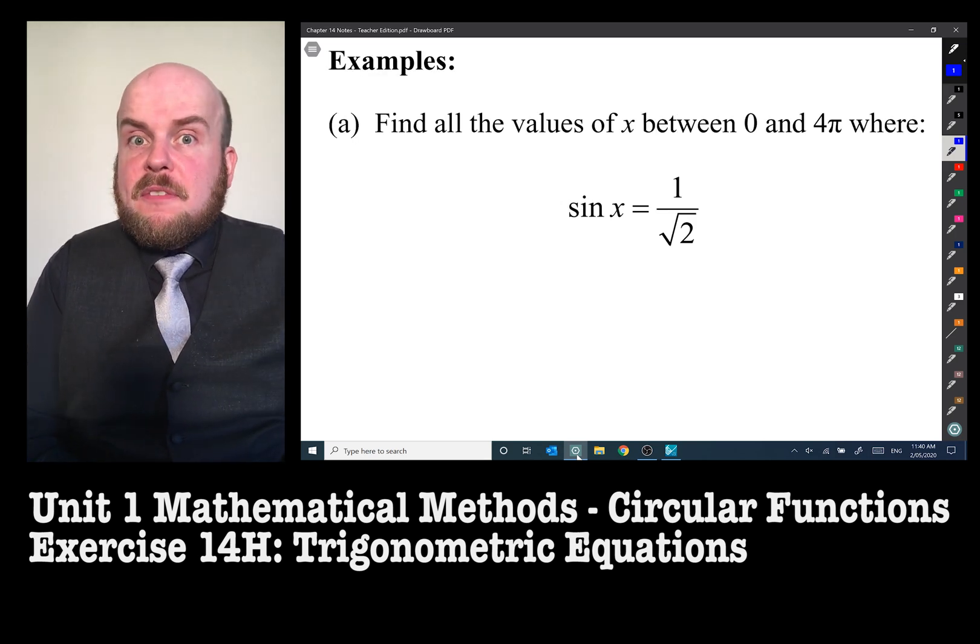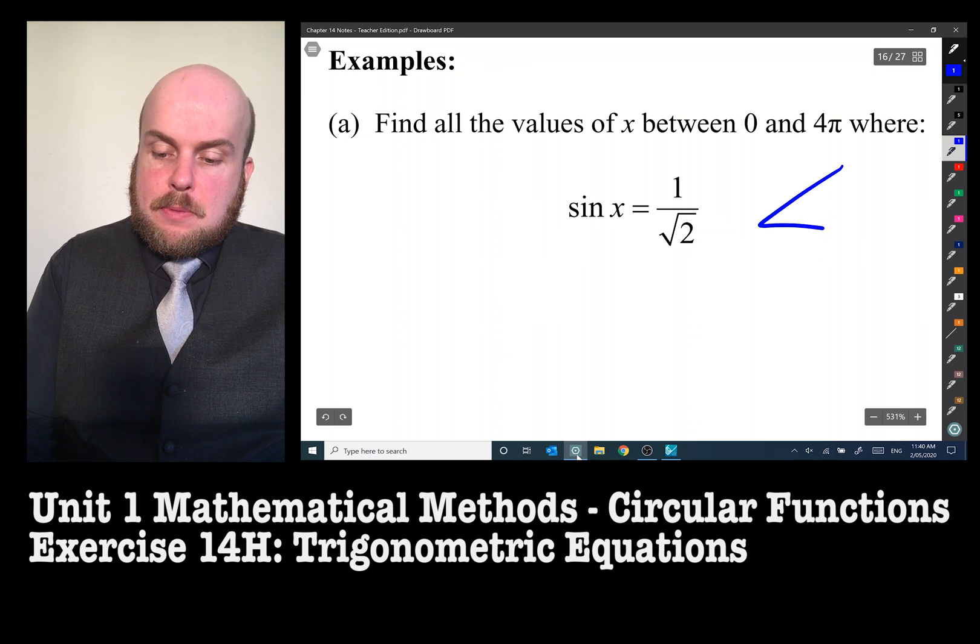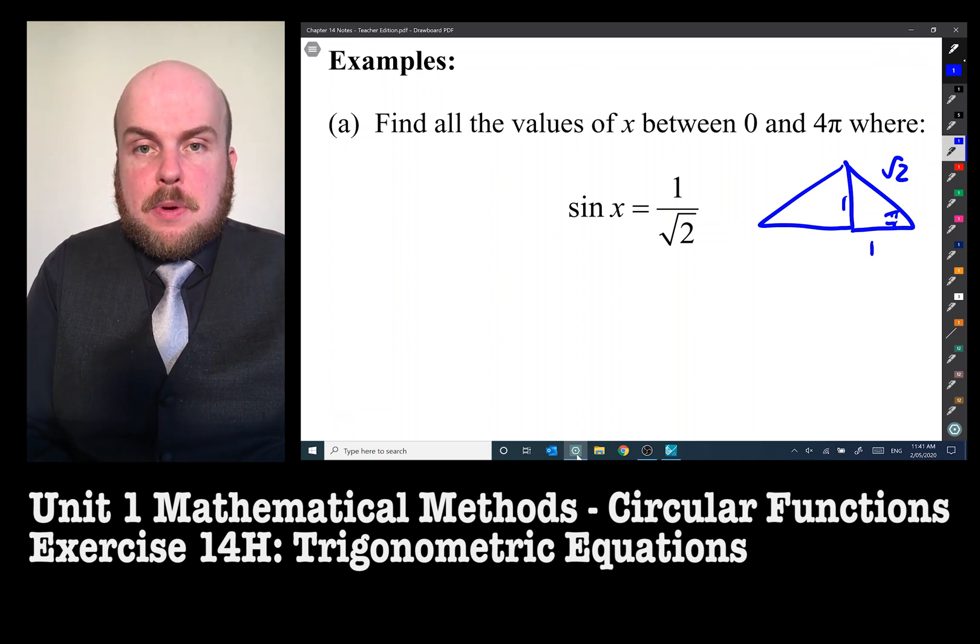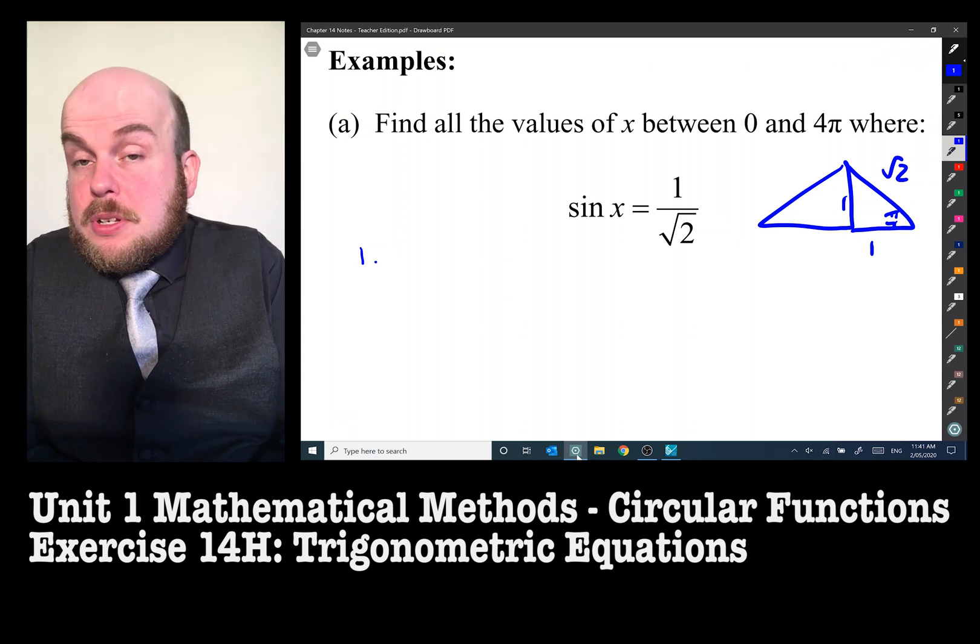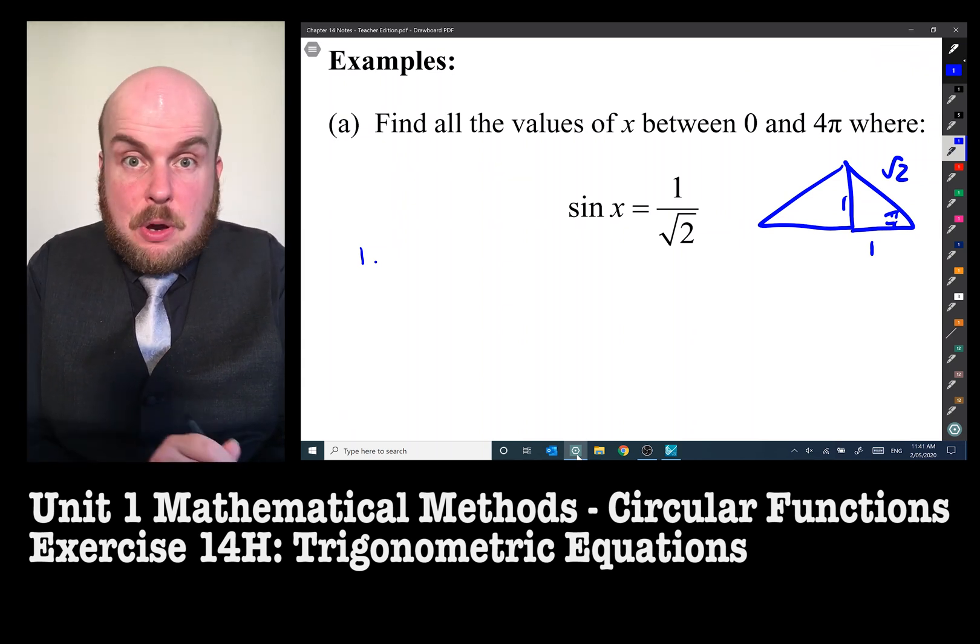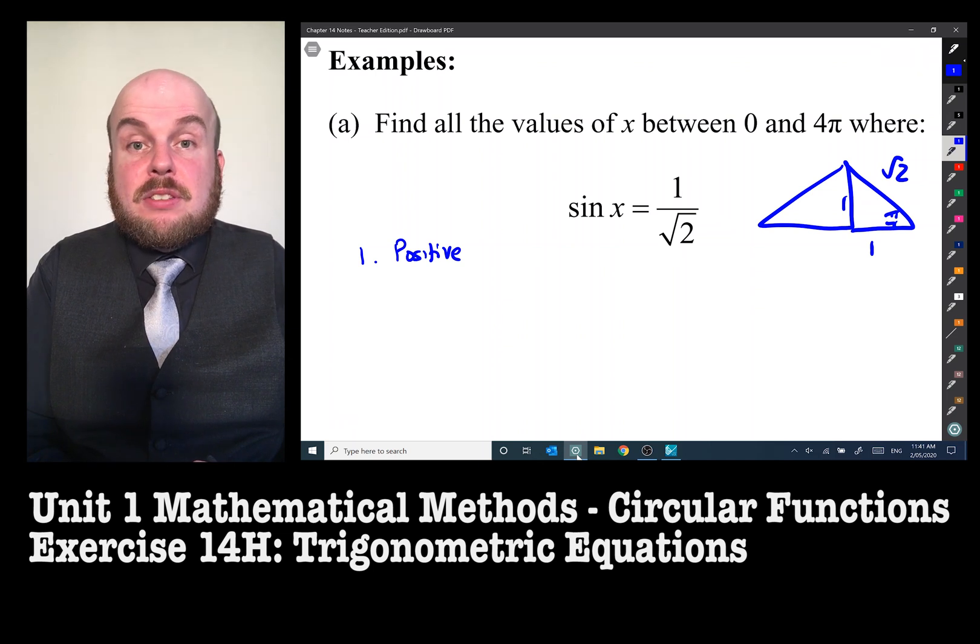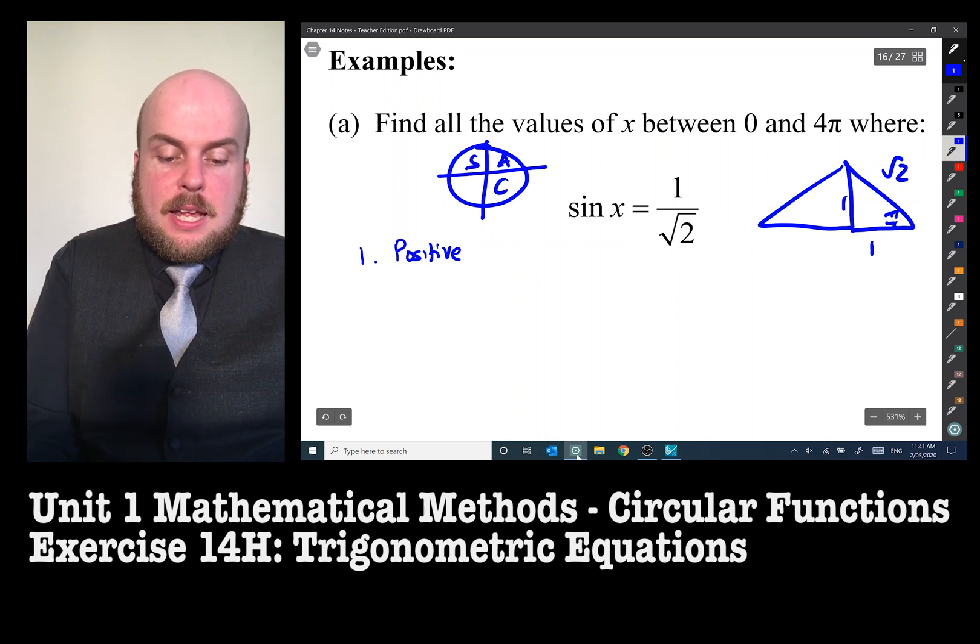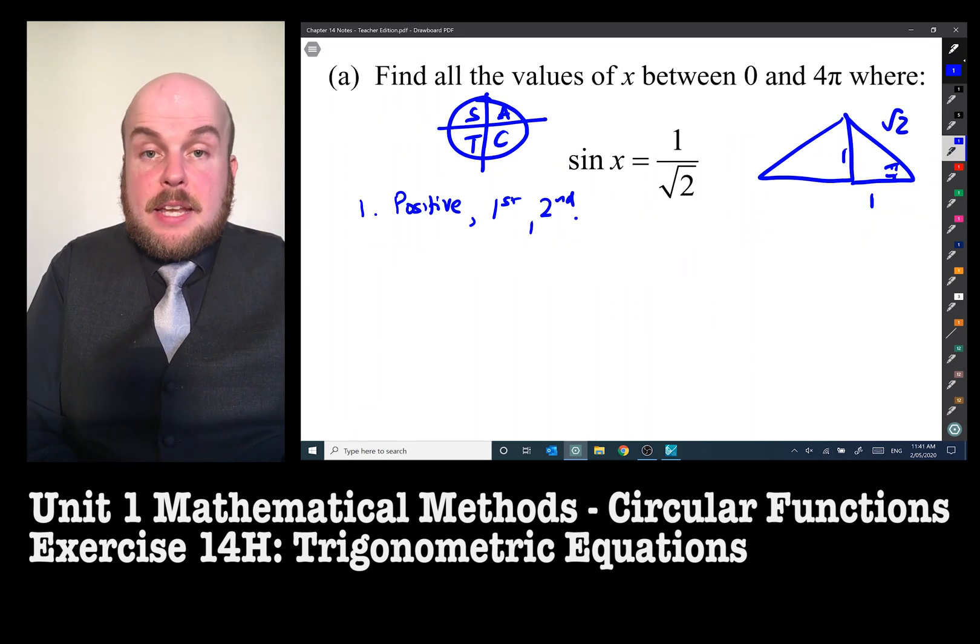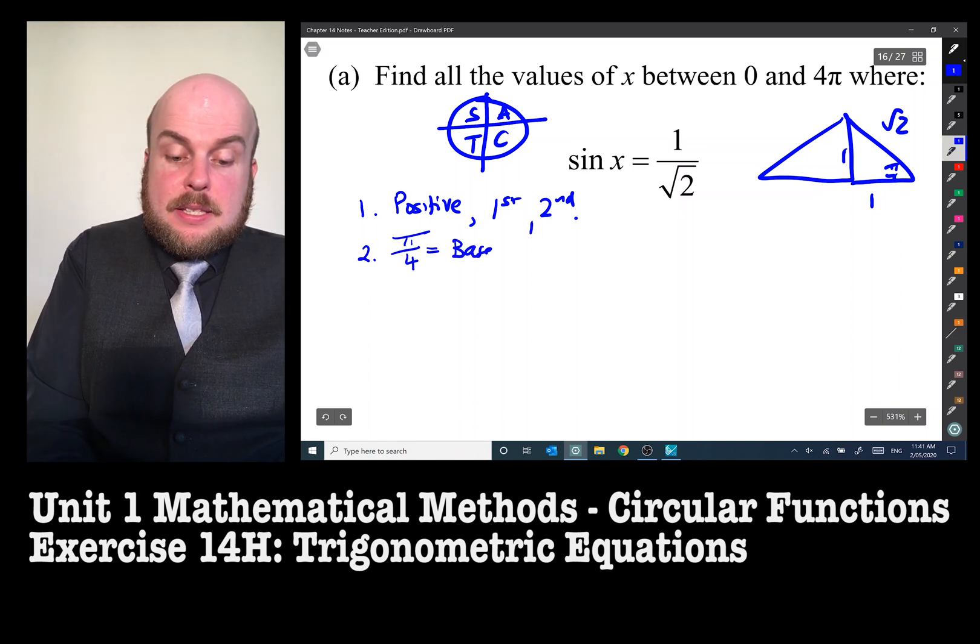Example one. Find all the values of x between zero and four pi where sine x is equal to one over root two. Draw my exact values triangle and I think you'll find, there it is, pi on four relates to one over root two. So I know that's going to be my base angle involved. But first things first, that we need to establish, is the answer positive or negative? There's no negative sign, so it's a positive. So therefore I need to know what quadrants is sine positive in. It's in the first and second quadrants. The next thing I need to do is to list the base angle and we have established that it's pi on four is equal to the base angle.